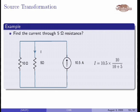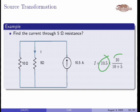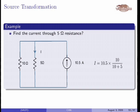What is the current division rule? To find the current through a branch of a parallel resistance, multiply the total current by the resistance of the other branch divided by the total resistance. Here the total current is 10.5 ampere and we need the current through the 5 ohm resistance, so the other branch is 10 ohm. Therefore: current through 5 ohm = 10.5 × 10 / (10 + 5). That is how source transformation is used to solve this problem.